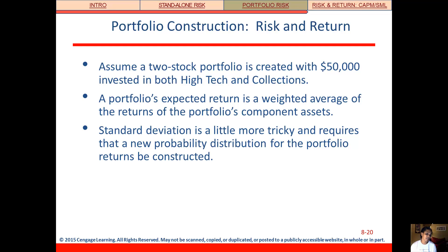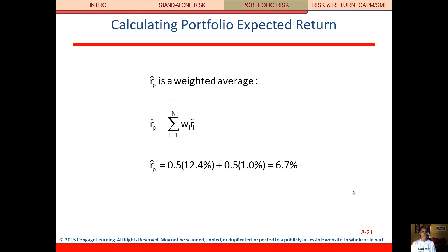Our portfolio's expected return is going to be a weighted average of the returns of the assets in the portfolio. But standard deviation is not a weighted average — we're going to have to do that same calculation that we did for standalone standard deviation. Here's the formula for portfolio expected return: instead of multiplying probabilities times forecasted returns, we're multiplying the weights.